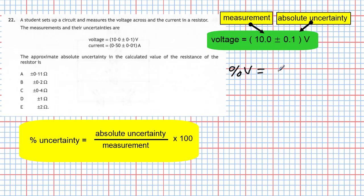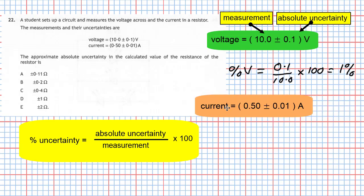The percentage uncertainty in the voltage equals 0.1 divided by 10.0, multiplied by 100. Working that out gives one percent. So the percentage uncertainty in the voltage is one percent. Now I can do the same calculation for the current.